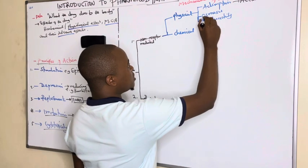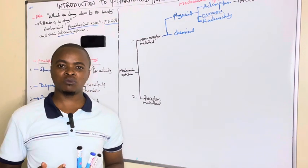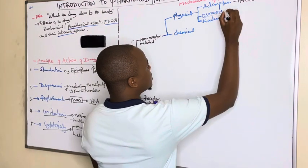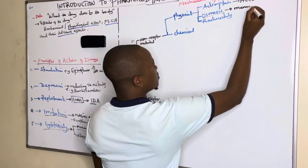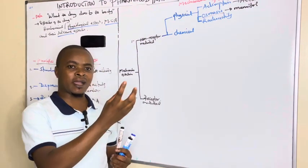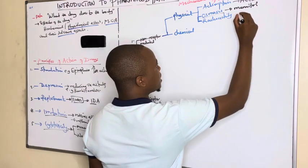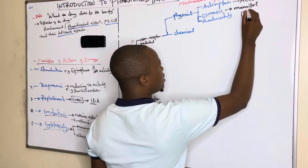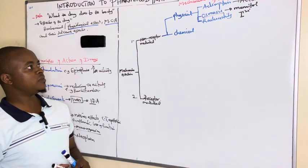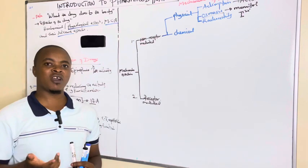Another physical mechanism is by osmosis, which applies to drugs that are highly osmolar. These drugs include mannitol — mannitol, when given, can cause diuresis or it absorbs water itself. We also have radioactive substances like iodine-125, which can be a good radioactive agent that when given can destroy cancerous cells. These are the physical mechanisms of drug action.